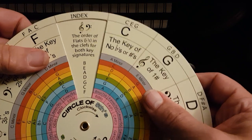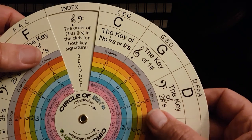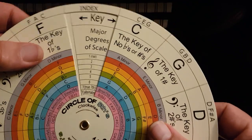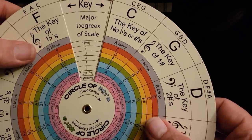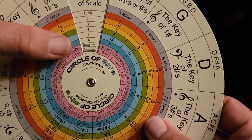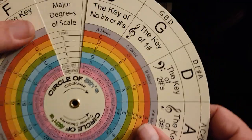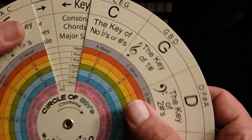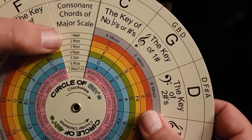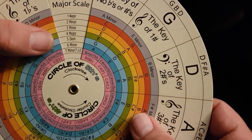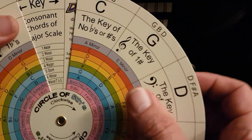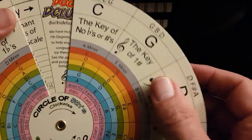And the order of flats in the clefs for both key signatures. And then we've got major degrees of the scale: first being the root and the second, third, fourth, fifth, sixth, seventh, true and seven alternative layer. Next one, consonant chords of major scale: first major, minor, minor, major, dominant, minor, and then so.